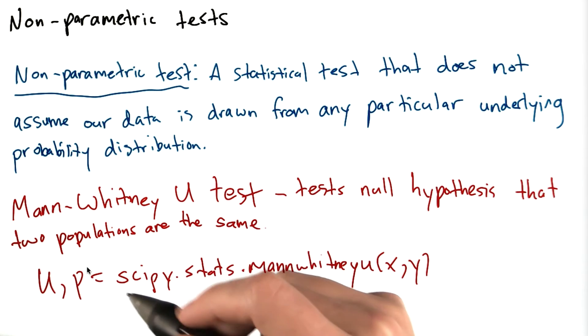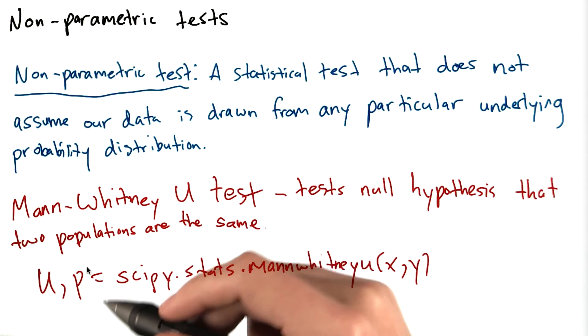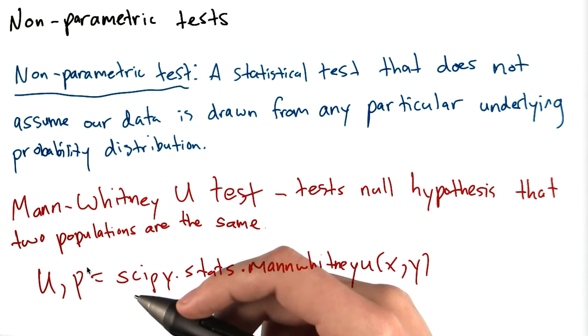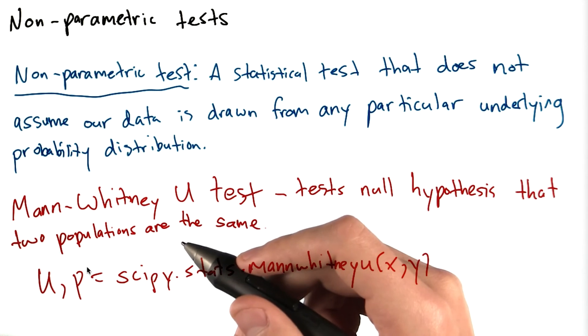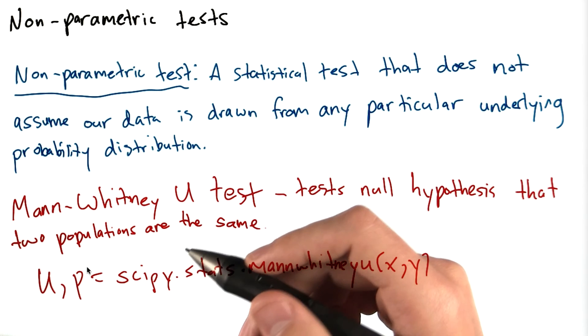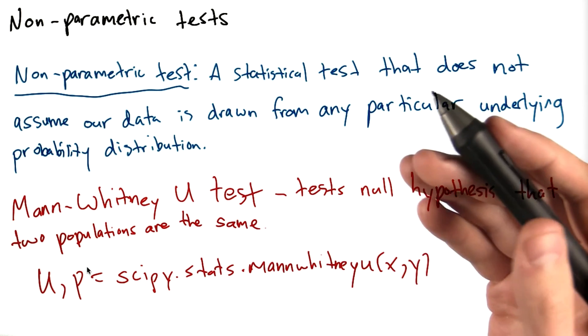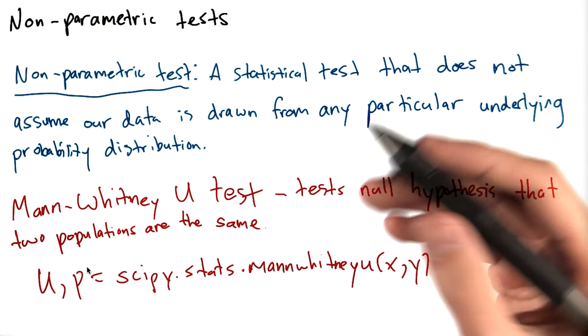Note that the Mann-Whitney-U test simply tests whether or not these samples came from the same population, but not necessarily which one has a higher mean or median. Because of this, it's usually useful to report Mann-Whitney-U test results along with some other information, like the two sample means or the sample medians.